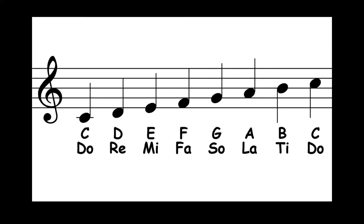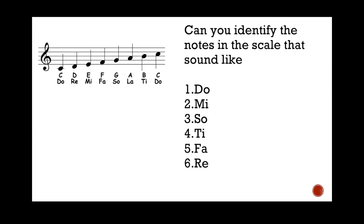For the next activity, we're going to have a go at matching the sound to the note name. Can you identify the notes in the scale that sound like: one — DO, so what note is DO? Two — MI. Three — SO. Four — TI. Five — FA. And six — RE. Pause the video here and write down the correct note next to each sound. When you're finished, press play.